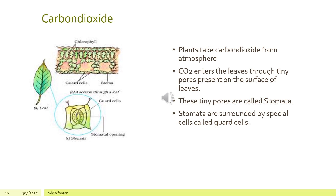Carbon dioxide enters the leaves through tiny pores present on the surface of the leaves. We are not able to see these tiny pores — they are called stomata. These stomata are surrounded by special cells called guard cells. Guard cells help to regulate the rate of transpiration by opening and closing of stomata.